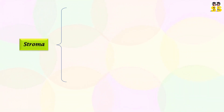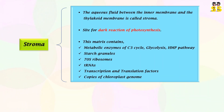Stroma is the aqueous fluid that lies between the inner membrane and the thylakoid membrane. The dark reaction of photosynthesis takes place in the stroma. This matrix contains a variety of metabolic enzymes, starch granules, 70S ribosomes, tRNAs, transcription and translation factors, and multiple copies of chloroplast DNA.